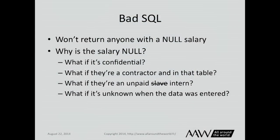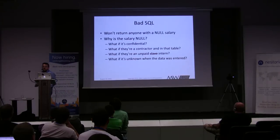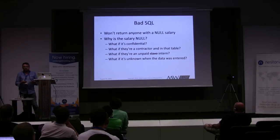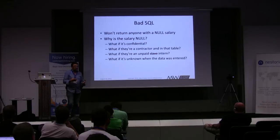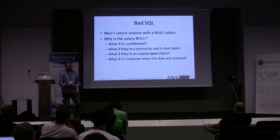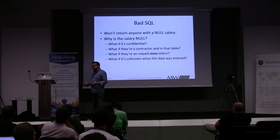Why might salary be null? It could be confidential — a contractor. They might be an unpaid intern. It might be unknown because they're a brand new employee and salary information hasn't been entered yet. All sorts of reasons. If they're an intern we know they'll never get the bonus; if it's unknown because the data hasn't been entered yet, they might qualify. Your business logic changes depending on the reason — that's why nulls get so complicated.